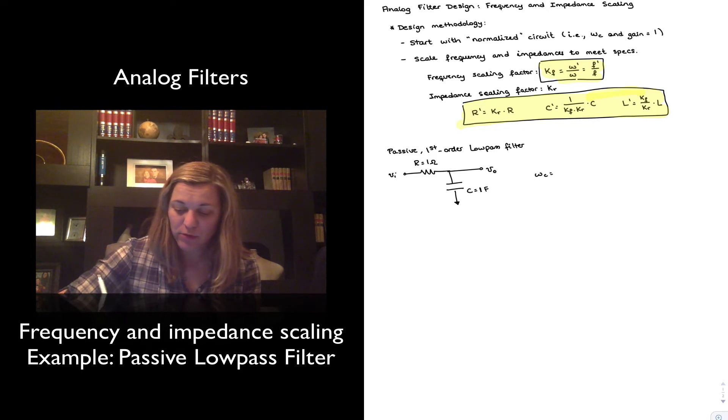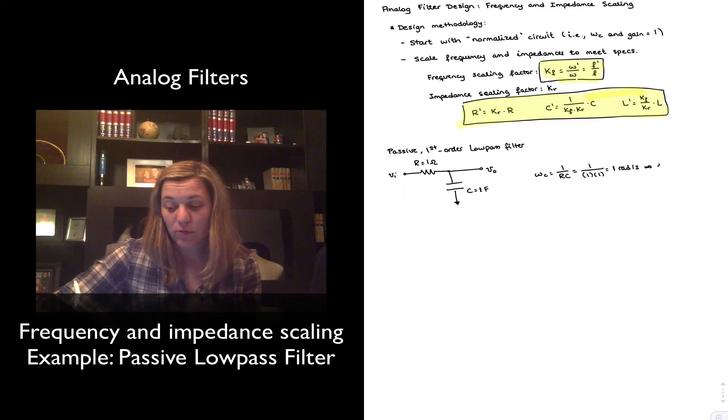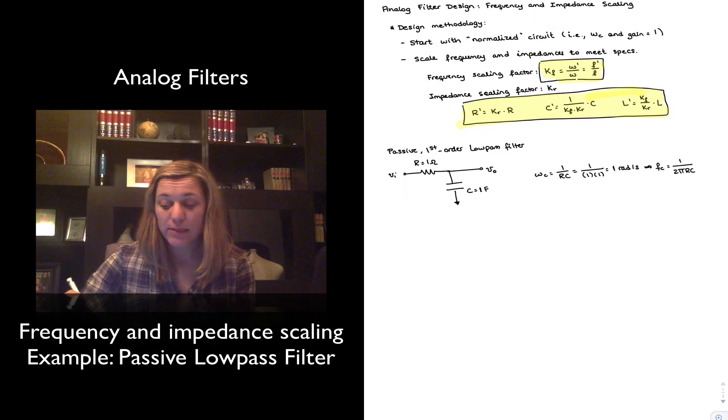Obviously, the cutoff frequency, one over RC is going to be equal to one over one times one, which is equal to one radian per second. And if I wanted to calculate my cutoff frequency in hertz, that will just be equal to one over two pi RC, or in this case simply one over two pi. So this is a normalized circuit.